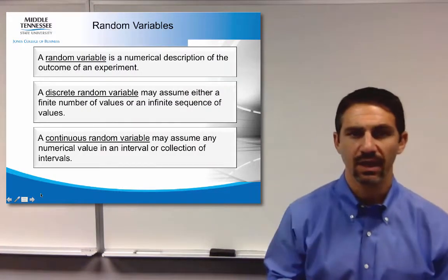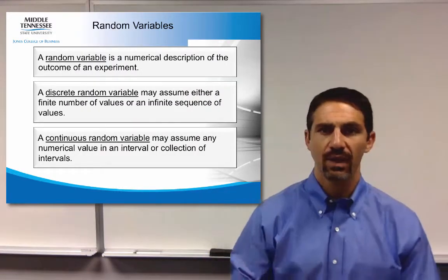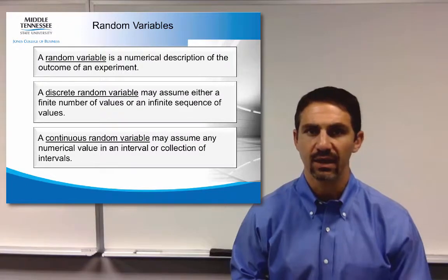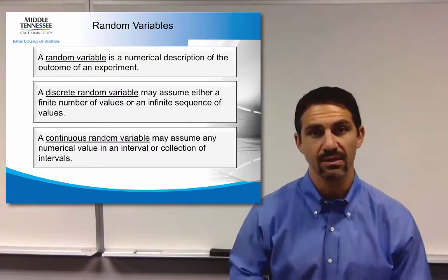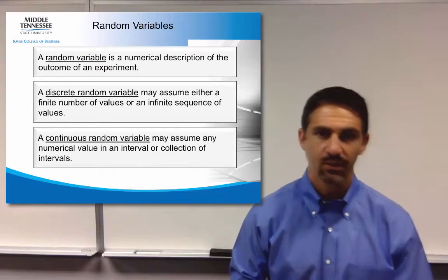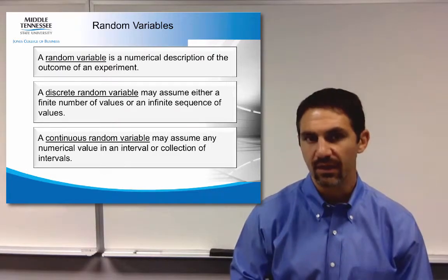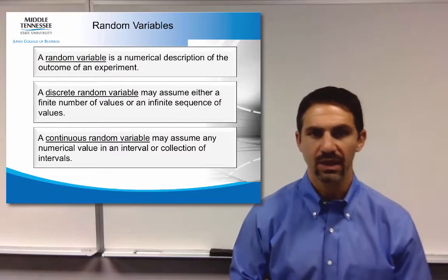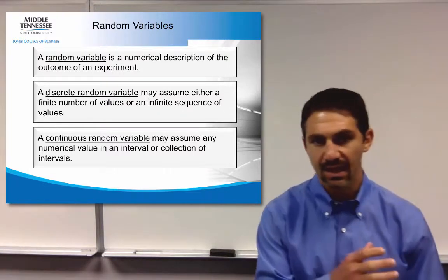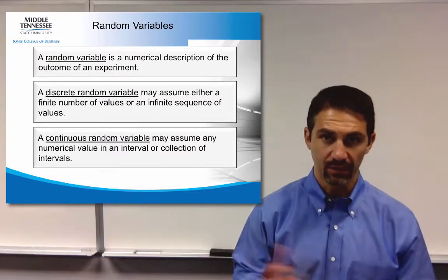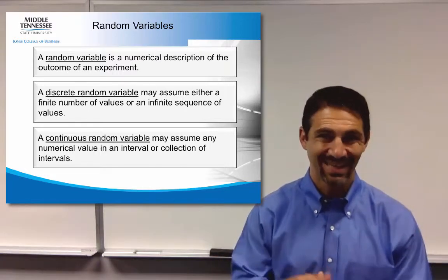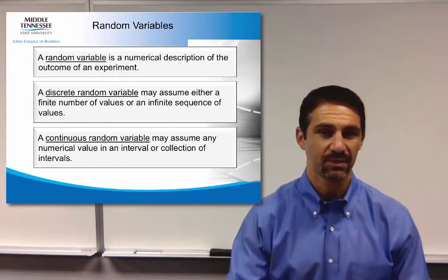So we're talking about a random variable, which means when there can be a different outcome for an experiment. A discrete random variable then is a value that is an integer style, where continuous will then be something that is either interval or ratio type data, and just think about it as a decimal place.